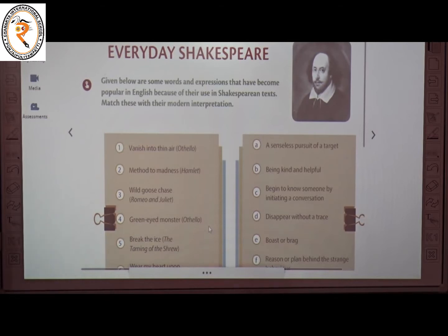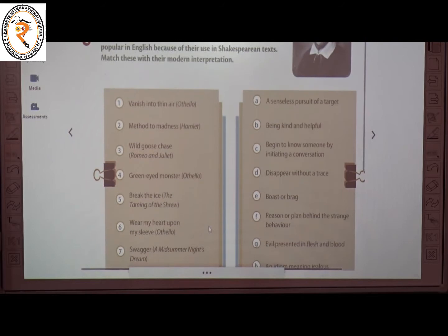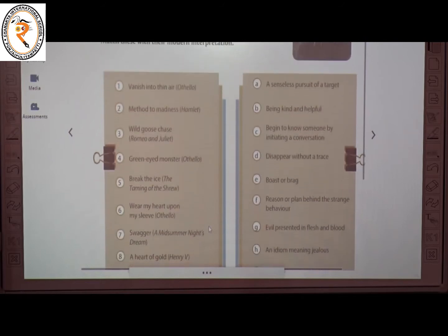Given below are some words and expressions that have become popular in English because of their use in Shakespeare's text. Match these with their modern interpretations. The first one is 'vanish into thin air' from the play Othello. The meaning of 'vanish into thin air' is to disappear without a trace.